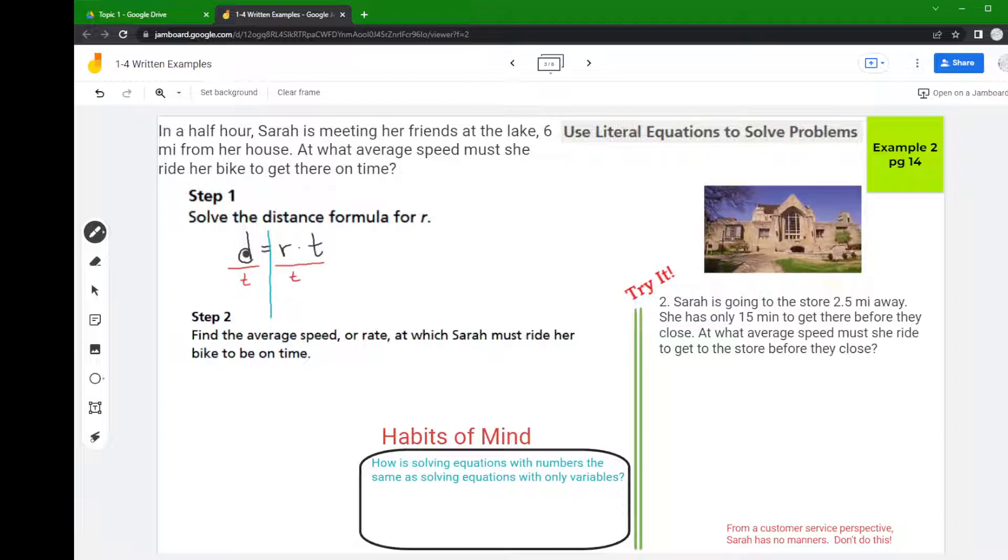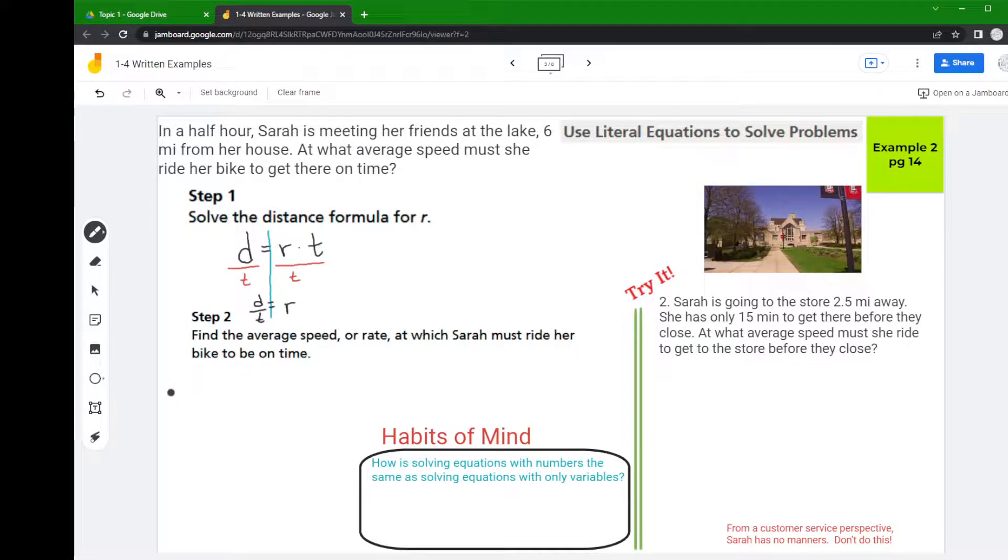Remember if you don't do it to both sides you'll have an imbalanced equation. So what ends up happening is you just get a fraction that says distance over time is equal to R.